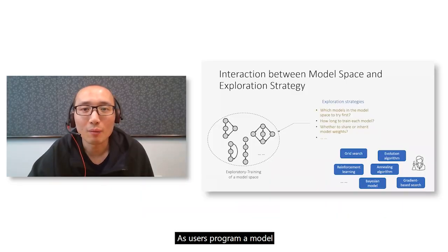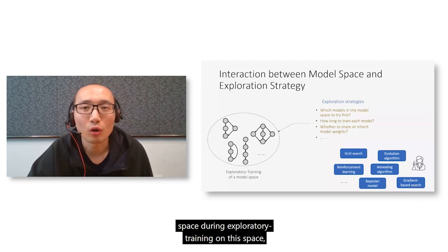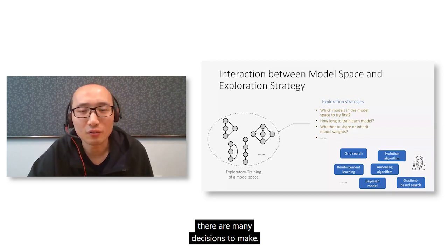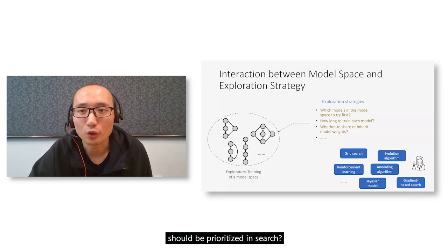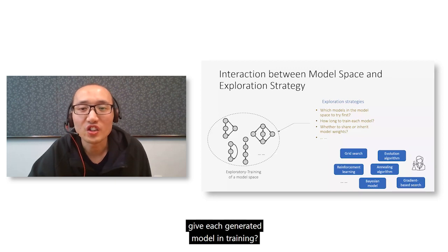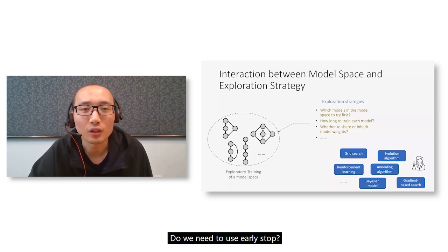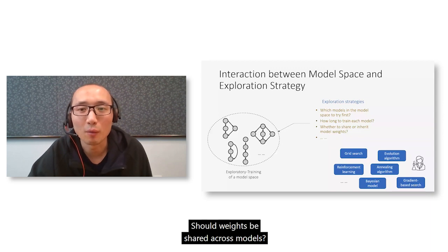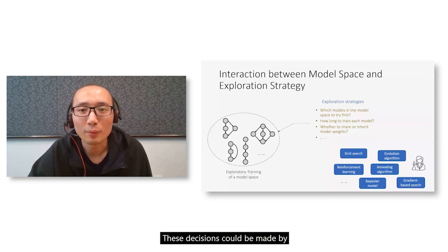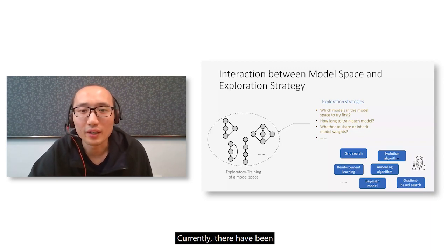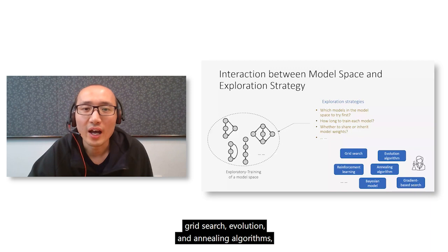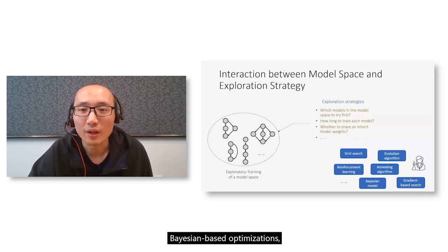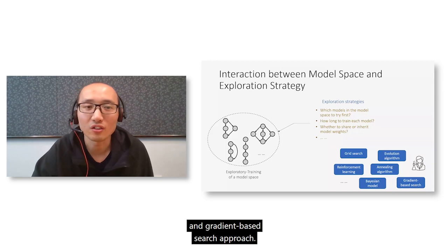As the user programs a model space, during exploratory training there are many decisions to make: which models should be prioritized in search, how much time budget to give each generated model in training, whether to use early stopping, and whether weights should be shared among models. These decisions could be made by exploration strategies or humans. Currently there are many good exploration strategies such as reinforcement learning, grid search, evolution, annealing algorithms, Bayesian optimization, and gradient-based search approaches.